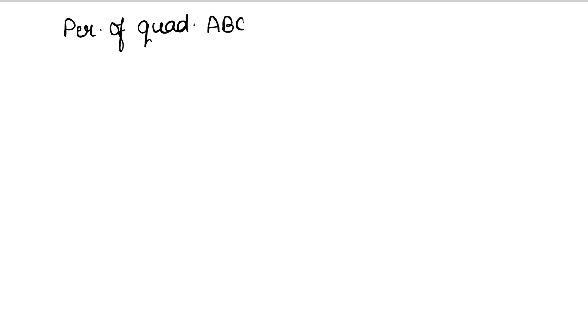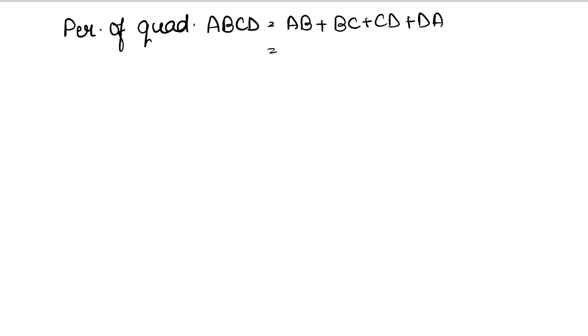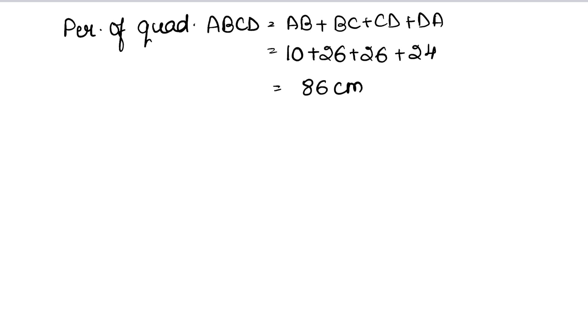Now we find the perimeter of quadrilateral ABCD. The perimeter equals AB plus BC plus CD plus DA, which is 10 plus 26 plus 26 plus 24. Adding these together: 10 plus 26 is 36, plus 26 is 62, plus 24 gives us 86 cm. So 86 cm is the perimeter of quadrilateral ABCD.